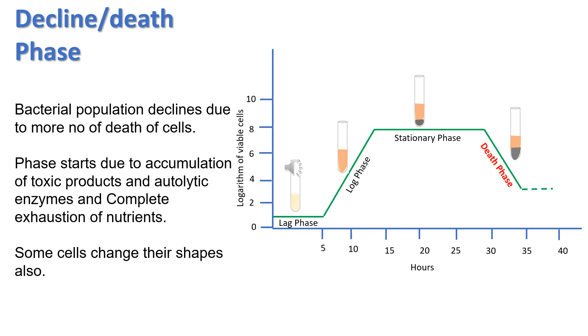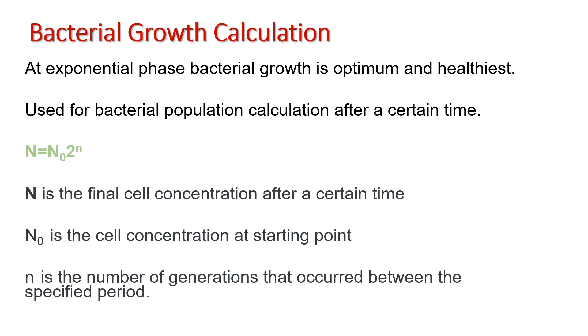Decline or death phase: During this phase, the bacterial population declines due to a greater number of cell deaths. This phase starts due to accumulation of toxic products and autolytic enzymes and complete exhaustion of nutrients. Even cells change their shapes also.